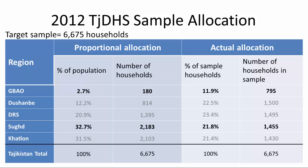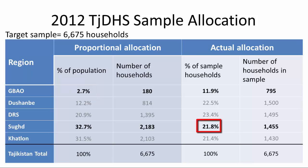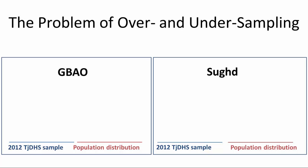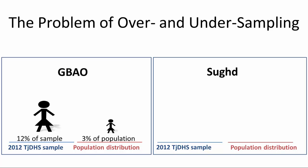So you might be thinking: we have a problem here! Because of oversampling, Gabau now represents 12% of the DHS sample when that region is only 3% of the population. And because of undersampling, Sugd is only 22% of the DHS sample when in reality that region makes up around 33% of the population. This can be a problem because estimates for Tajikistan as a whole will be biased, since the distribution of regions in our sample is dramatically different from the actual regional distribution. Women in Gabau now make up 12% of the sample instead of their true 3%, while women in Sugd make up 22% of the sample instead of their true 33%.